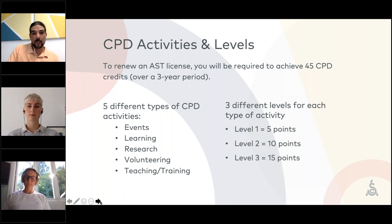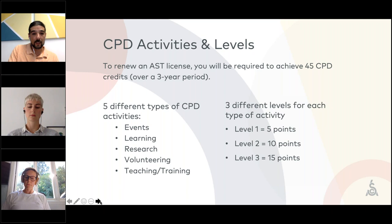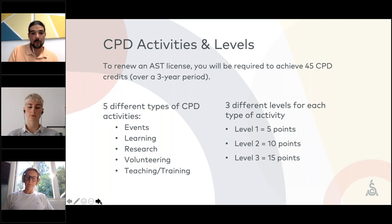To earn points, you log the activities you've been doing. These activities are divided into five different CPD activity categories. Within these activities, there are three different levels. To renew your license, you will be required to earn a total of 45 CPD credit points over a three-year period. Activities include events, learning, research, volunteering, teaching, training, and miscellaneous. In terms of levels: level one earns 5 points, level two earns 10 points, and level three earns 15 points. Just one activity of each level gets you very close to 45 points.